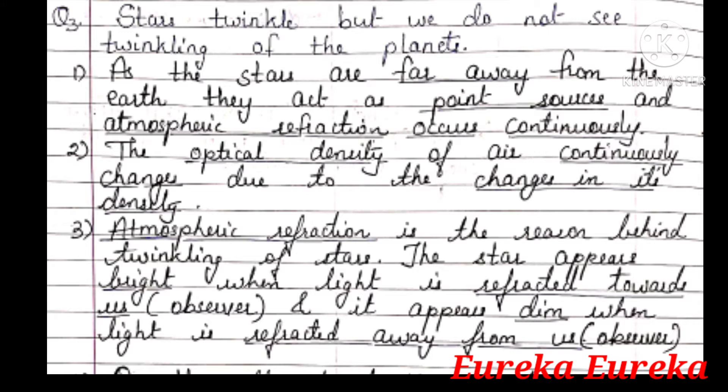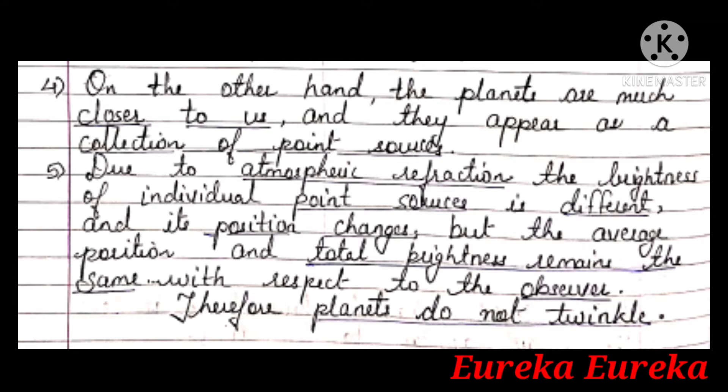The star appears bright when light is refracted towards us, that is the observer, and it appears dim when light is refracted away from us. On the other hand, planets are much closer to us. They appear as a collection of point sources and due to atmospheric refraction, the brightness of the individual points of the planet is different and their position changes. But the average position and total brightness remains the same with respect to the observer. Therefore, planets do not twinkle.